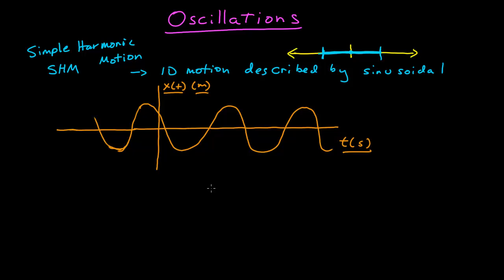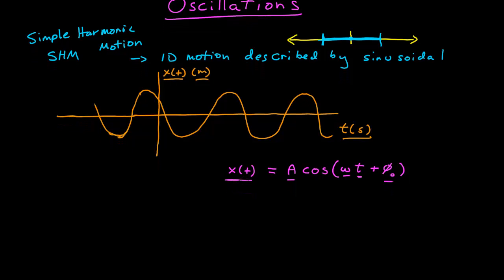If I want to represent this motion mathematically, I can represent it in the form of some constant A times a cosine of another constant omega times t, plus some other constant phi naught. So position is a function of time, and there are three constants: A, omega, and phi naught. This is my one-dimensional sinusoidal function of time that can describe the oscillatory motion.